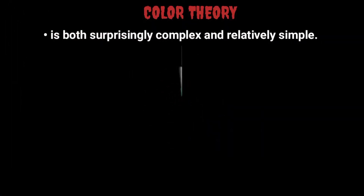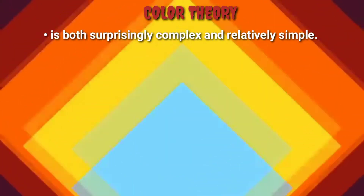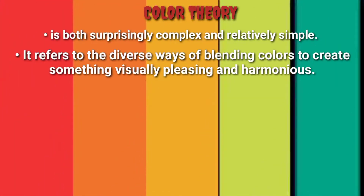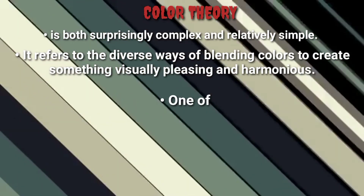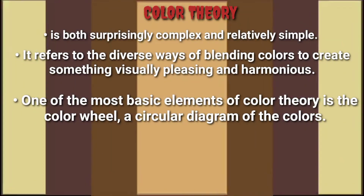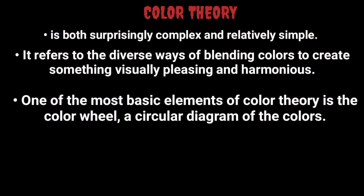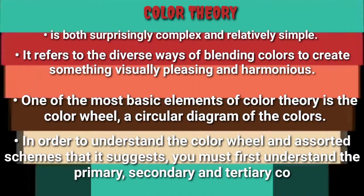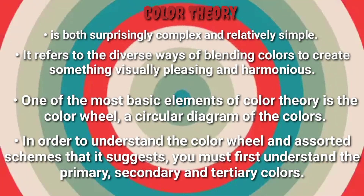Color theory is both surprisingly complex and relatively simple. It refers to the diverse ways of blending colors to create something visually pleasing and harmonious. One of the most basic elements of color theory is the color wheel, a circular diagram of the colors. In order to understand the color wheel and assorted schemes, you must first understand the primary, secondary, and tertiary colors.